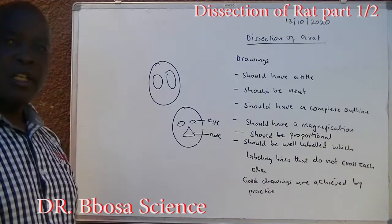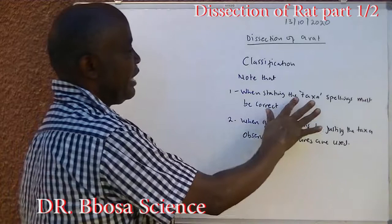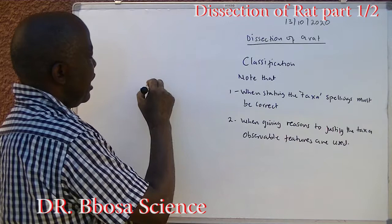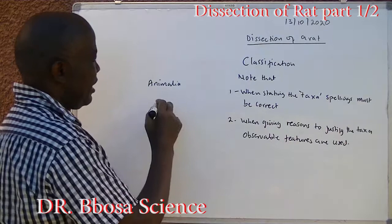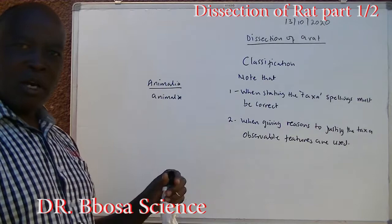Classification: before you classify the rat, note that when writing the taxa, spelling must be correct — wrong spellings are not marked. For example, the kingdom is Animalia. If you write 'Animal,' this is wrong. We need correct spellings: Kingdom Animalia, not Kingdom Animal.